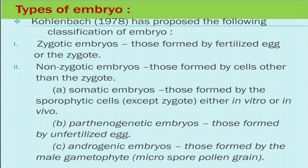Somatic embryos are those formed by sporophytic cells, either in vitro or in vivo. Parthenogenic embryos are those formed by an unfertilized egg. Androgenic embryos are those formed by the male gametophyte — meaning the microspores or pollen grains.